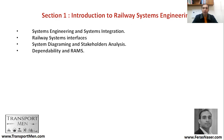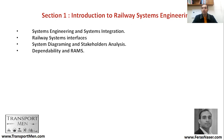سوف نتحدث عن System Diagramming and Stakeholder Analysis - كيف يتم رسم النظام وشرحه بشكل جيد لجميع الأشخاص أو المؤسسات أو الشركات، ما يسمى بالـ Stakeholders المؤثرين في النظام. ثم سوف نتحدث عن Dependability and RAMS - الاعتمادية، والـ RAMS اختصار لـ Reliability, Availability, Maintenance and Safety - الاعتمادية، التواجد، الصيانة، والأمان، وهي مؤشرات رئيسية في أي نظام من أنظمة السكك الحديدية.